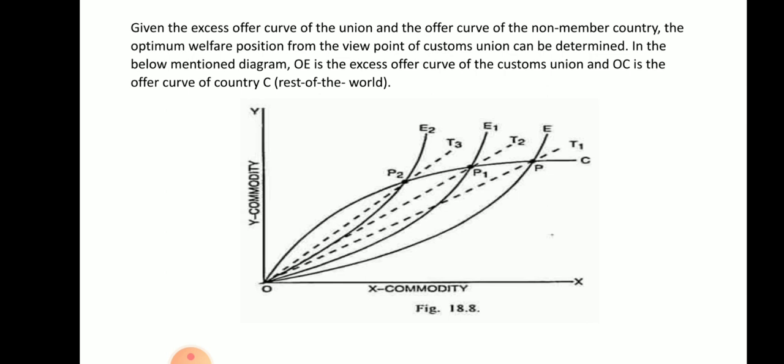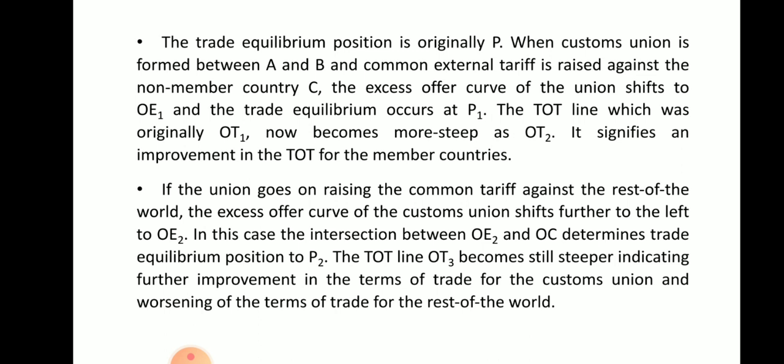The trade equilibrium position is originally at point P. When the customs union is formed between A and B and common external tariffs are raised against non-member country C, the excess offer curve of the union shifts to OE1 and trade equilibrium occurs at P1. The terms of trade line, which was originally OT1, now becomes more steep as OT2, signifying an improvement in the terms of trade for the member countries. In both country A and country B, you can see improvement in welfare.